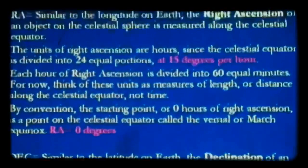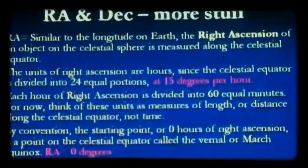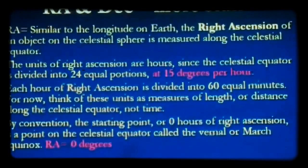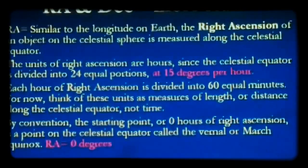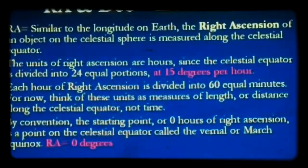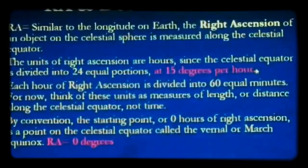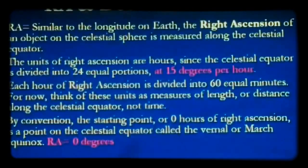Right ascension is similar to longitude on the Earth. It's measured along the celestial equator — think of longitude lines running north and south. Right ascension divides the sky into pie slices, but unlike longitude, we measure it in hours and minutes. A complete arc of 360 degrees is divided into 24 hours, with each hour equal to 15 degrees. So if you took out a protractor and measured one hour of right ascension, that would translate into 15 degrees of angle.